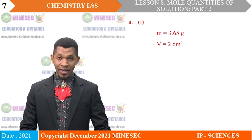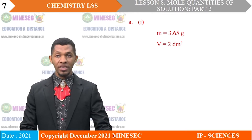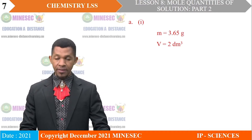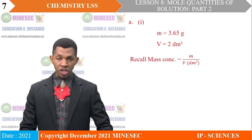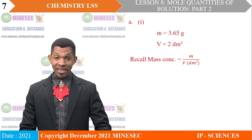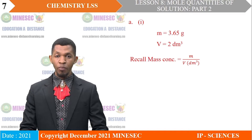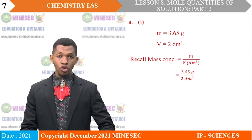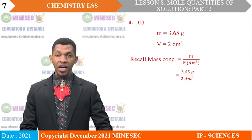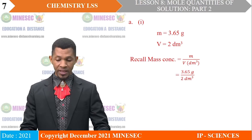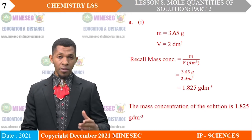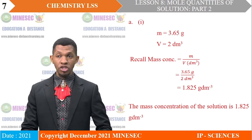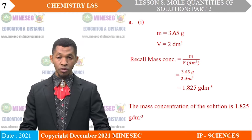A, Roman 1: The mass of anhydrous sodium carbonate is 3.65 grams and the volume of the solution is 2 cubic decimeters. Mass concentration equals given mass divided by volume in cubic decimeters. Substituting, mass concentration equals 3.65 grams divided by 2 cubic decimeters. Simplifying, the mass concentration of the solution of sodium carbonate is 1.82 grams per cubic decimeter.